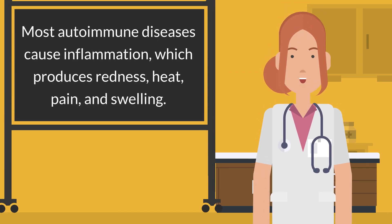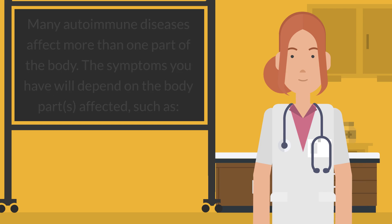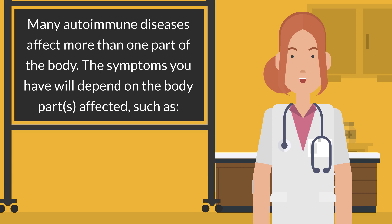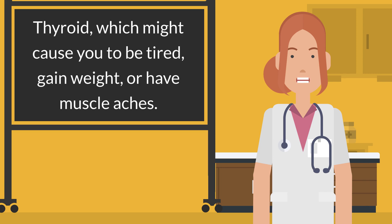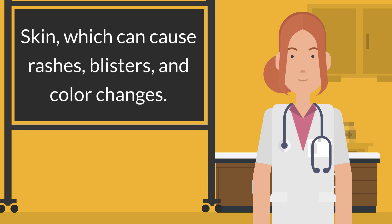Most autoimmune diseases cause inflammation, which produces redness, heat, pain, and swelling. Many autoimmune diseases affect more than one part of the body. The symptoms you have will depend on the body parts affected, such as joints, which can cause joint pain, stiffness, and loss of function; thyroid, which might cause you to be tired, gain weight, or have muscle aches; and skin, which can cause rashes, blisters, and color changes.